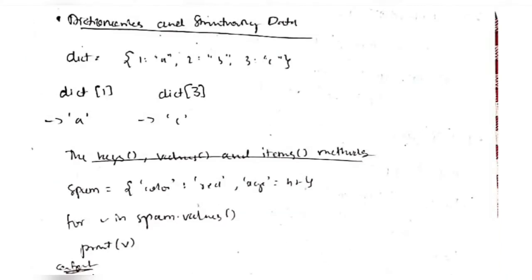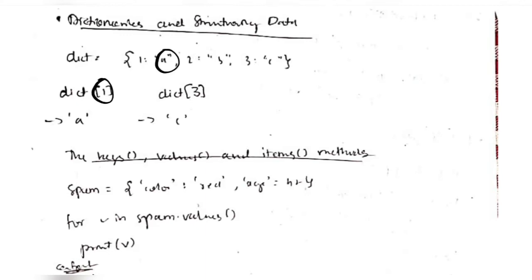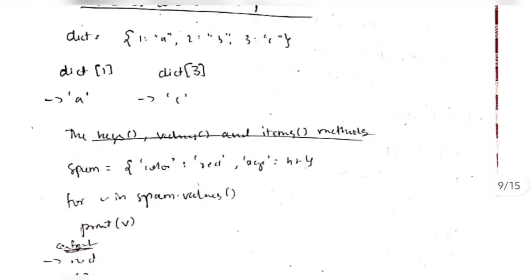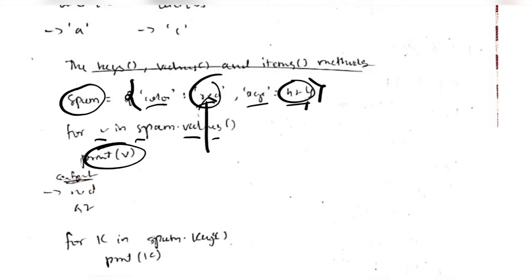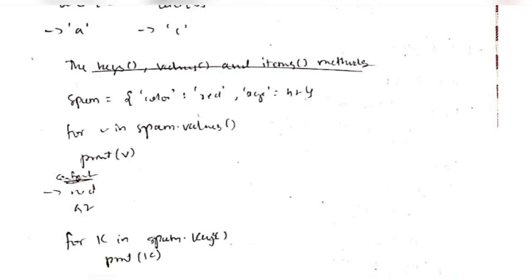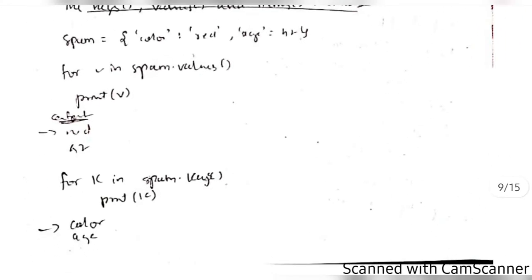Dictionary is used to store key-value pairs. For example, a dictionary with keys 1, 2, 3 assigned values 'a', 'b', 'c' respectively — dict[1] will output 'a', dict[3] will output 'c'. This is similar to hash mapping. For the dictionary spam with key 'color': 'red' and 'age': 41, using 'for v in spam.values()' will print the values 'red' and 42. Using 'for k in spam.keys()' will print the keys 'color' and 'age'.